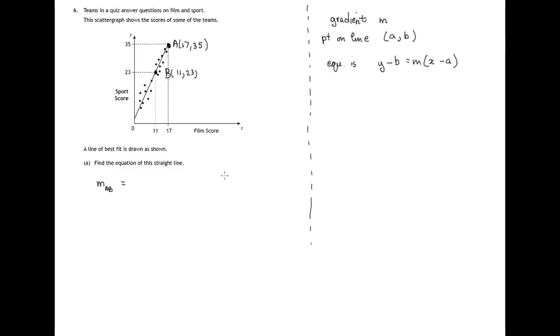And for this, we use the gradient formula, which is the y difference over the x difference. That's the y difference, 35 minus 23, difference of the two y coordinates, over the x difference, 17 minus 11. You need to watch out that you don't swap the order round. If you've started with this point A for the y difference, then you must start with the point A for the x difference. Don't swap them round. So 35 minus 23 is 12, and 17 minus 11 is 6, 6 into 12 goes two times. So the gradient is 2.